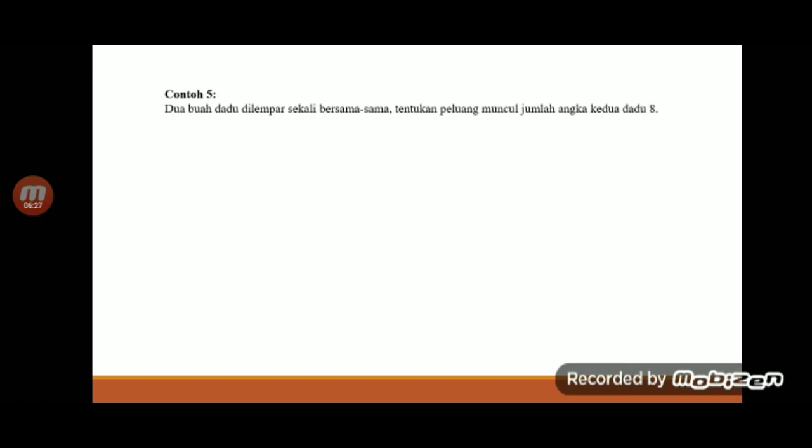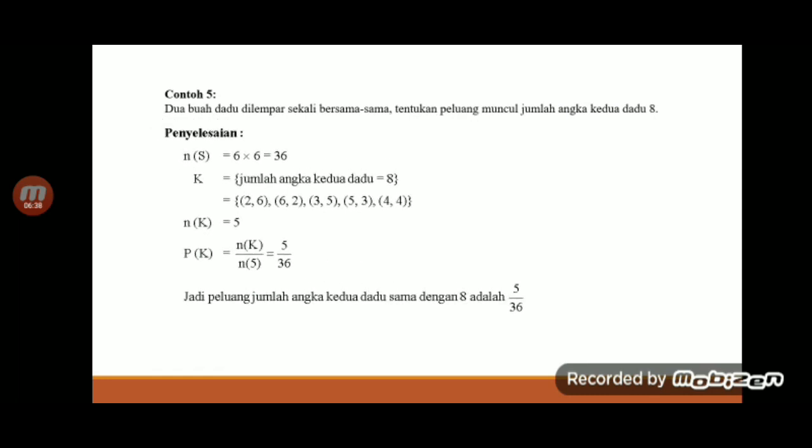Kita lanjut soal yang kelima. Dua buah dadu dilempar sekali bersama-sama. Tentukan peluang muncul jumlah angka kedua dadu adalah 8. Berarti disini kita cari dulu ruang sampelnya. Kedua buah dadu dilempar bersama, berarti 1,1, 1,2, 1,3 sampai 6,6 tadi. Berarti jumlahnya adalah 6 x 6 atau 36.